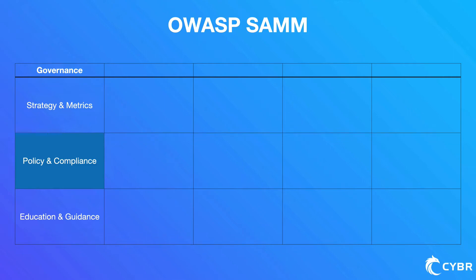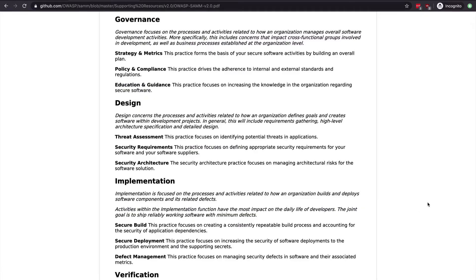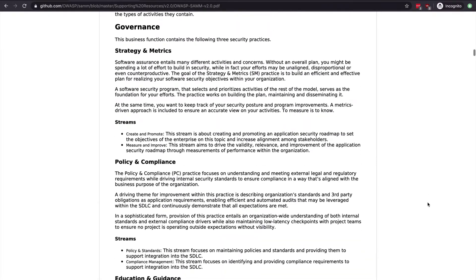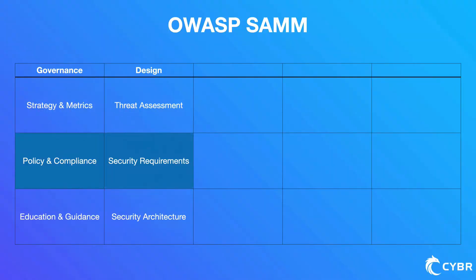For each of these business functions, SAMM defines three security practices each — so there are 15 security practices in total. For governance, the security practices are: strategy and metrics (forming the basis of your secure software activities by building an overall plan), policy and compliance (driving adherence to internal and external standards and regulations), and education and guidance (increasing knowledge in the organization regarding secure software). For design, the security practices are: threat assessments (identifying potential threats in applications), security requirements (defining appropriate security requirements for your software), and security architecture (managing architectural risks for the software solution).